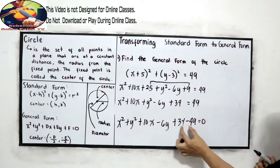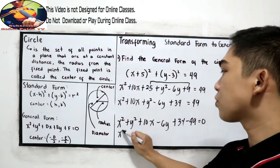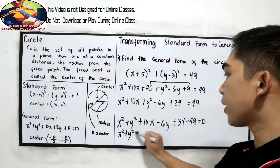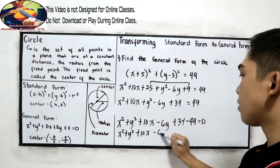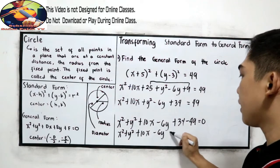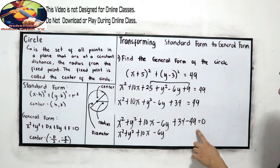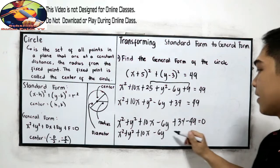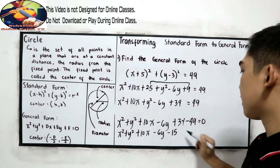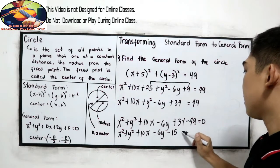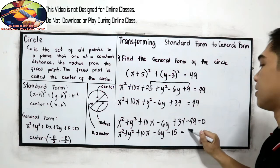Let us combine. So x squared plus y squared, plus 10x, minus 6y. 34 minus 49 — that is negative 15 — is equal to 0.